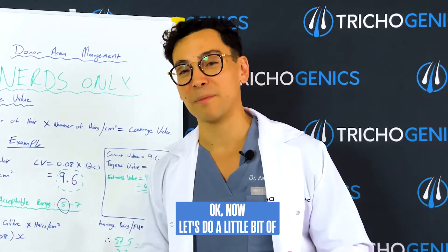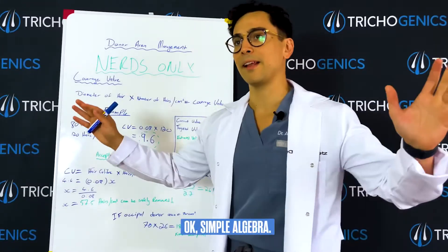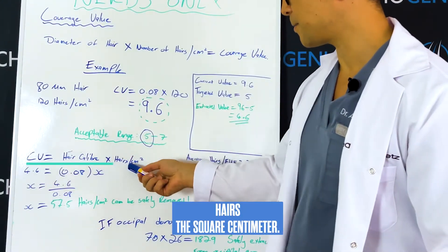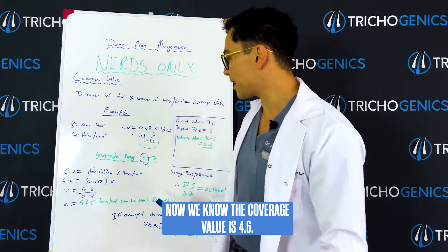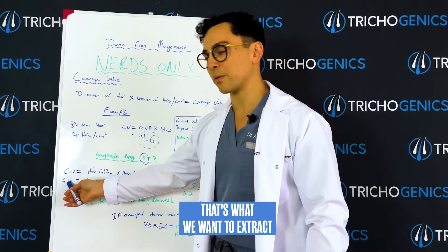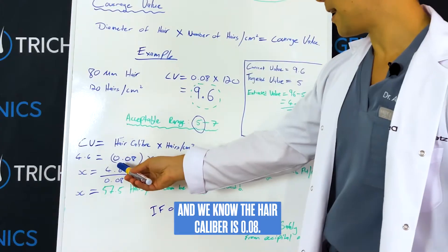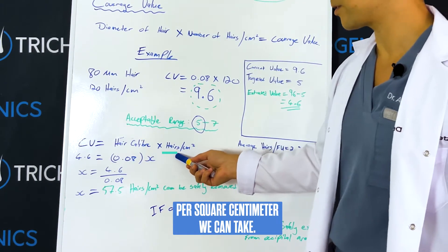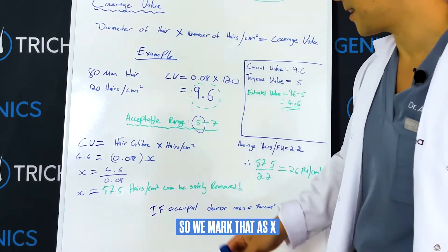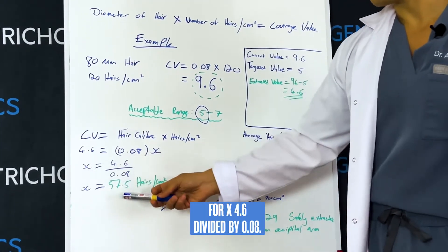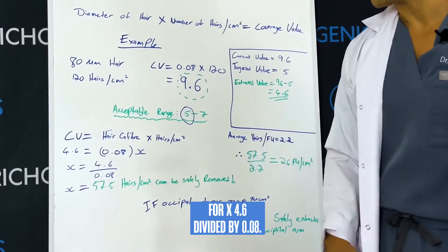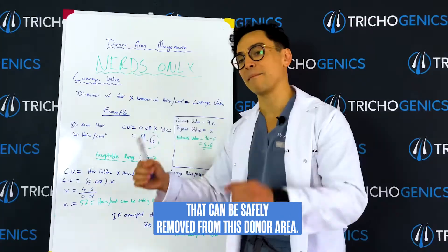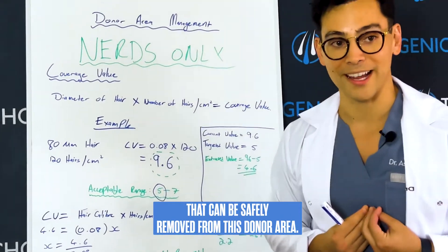Now let's do a little bit of mathematic wizardry — simple algebra. Let's take the formula: coverage value equals hair caliber times hairs per square centimeter. We know the coverage value is 4.6 — that's what we want to extract — and we know the hair caliber is 0.08, but we want to find out how many hairs per square centimeter we can take, so we mark that as x. Solving for x: 4.6 divided by 0.08 gives us 57.5 hairs per square centimeter that can be safely removed from this donor area.